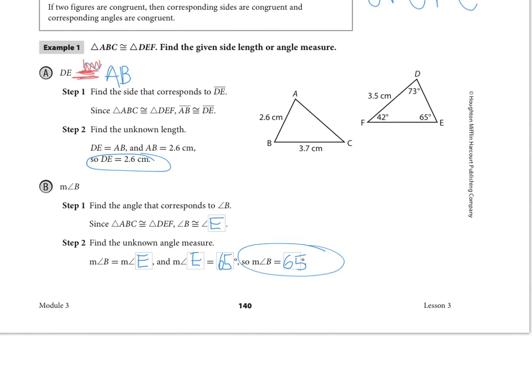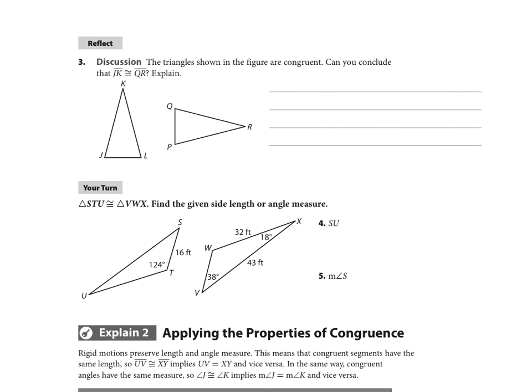All right, on the next page, let's do some your turns here. I want you to do your turn 4 and 5, both of which are referring to the diagram with these two triangles, STU and VWX. Make sure you know which piece corresponds to which, and know that you're always going to be looking at the congruence statement to kind of figure that out. So take a pause on the video, and find those missing pieces or given the lengths or angle measures that they're looking for.